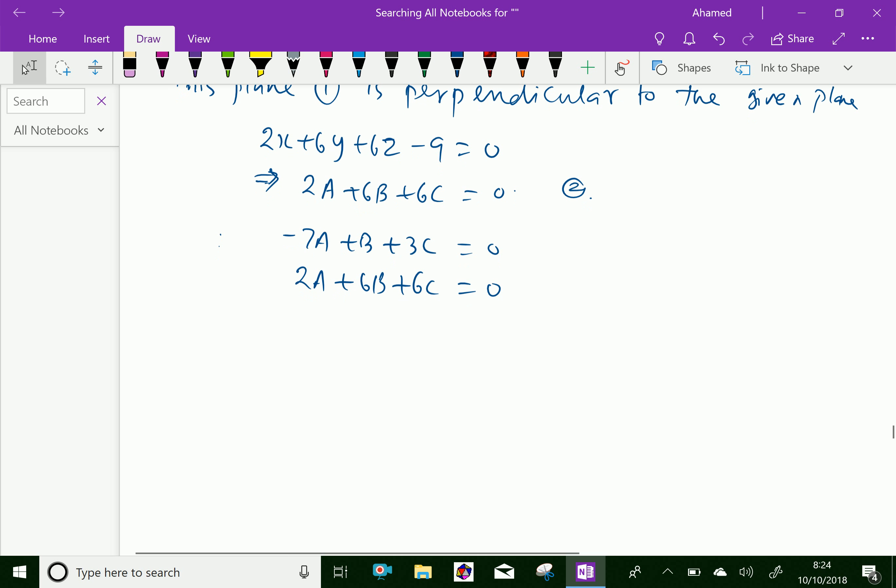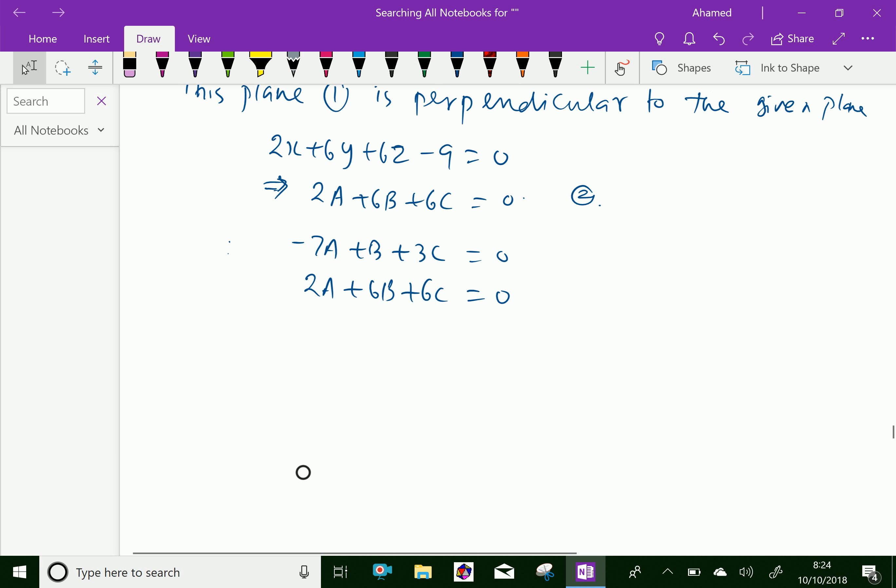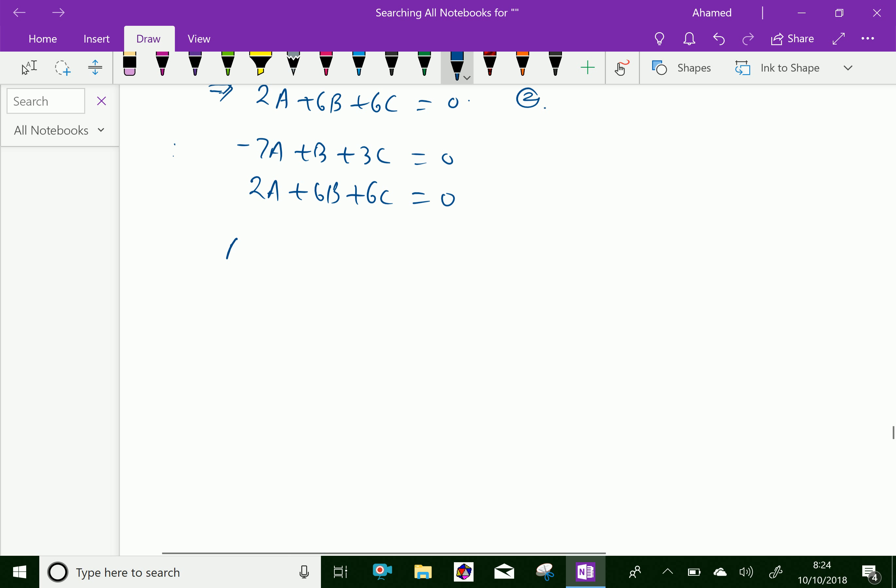Now by solving by cross multiplication we get A over 1×6 is 6 and 3×6 is minus 18.